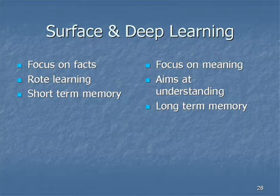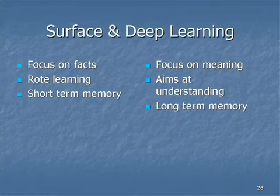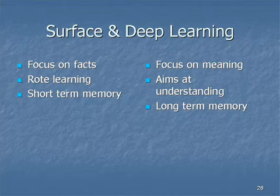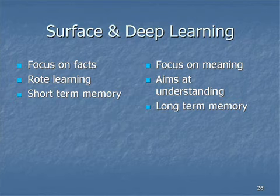Surface learning refers to learning which is largely about memory. The characteristics of a surface learner are that they focus on facts and the short term — you don't retain that learning for very long. A driving licence is an example of something that encourages surface learning because it's rote memory. Whereas deep learning aims at understanding; people that engage in deep learning focus on meaning rather than detail, try to grasp the whole and how it fits together, and provided that's reinforced from time to time, deep learning is characterised by long-term memory.